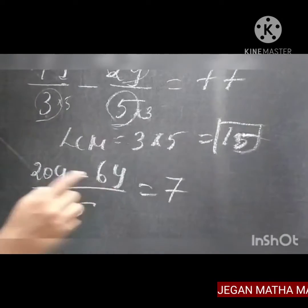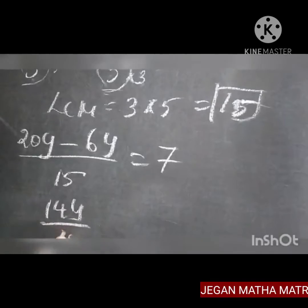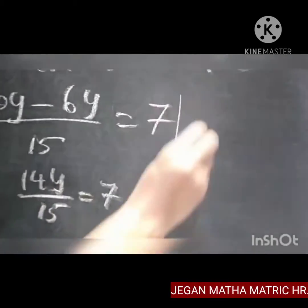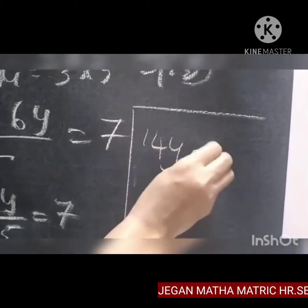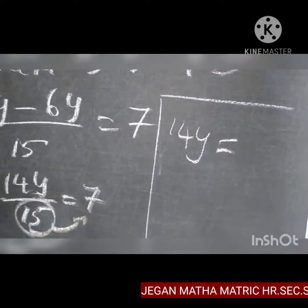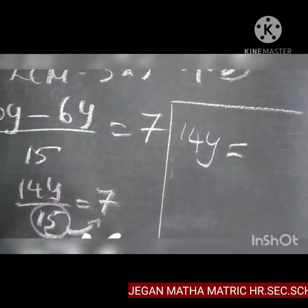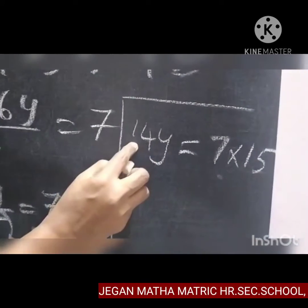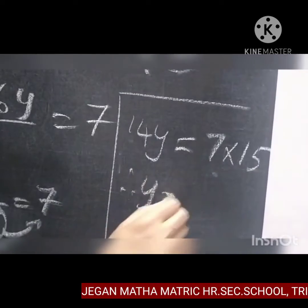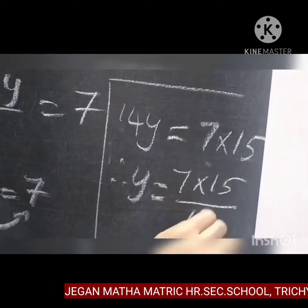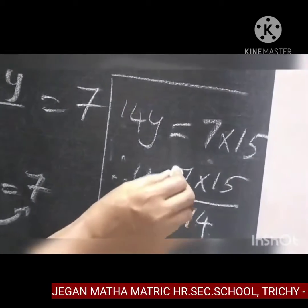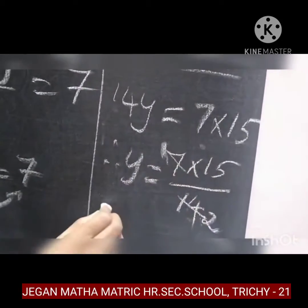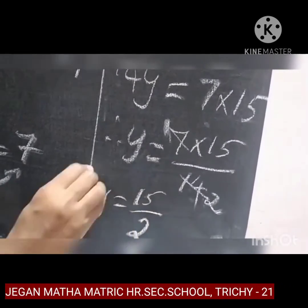20y minus 6y gives 14y divided by 15 equal to 7. We want to find out the value of this variable. Keep 14y on the left hand side; this 15 comes to the RHS side — it is a denominator, so transferred to RHS it becomes numerator. So 14y equal to 7 into 15. Therefore, y equal to 7 into 15 divided by 14. Do the cancelling: 7 and 14 — 2 sevens are 14. So the value of y equal to 15 by 2.